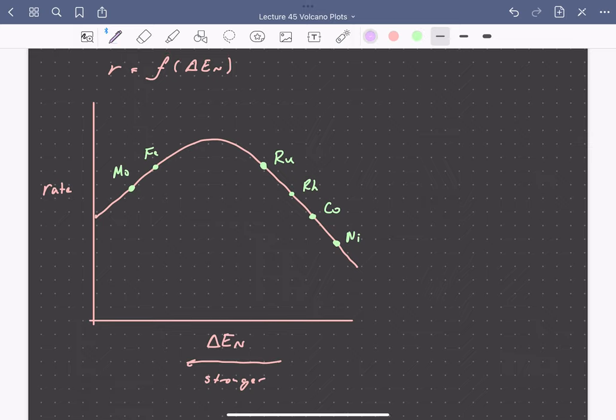We can also think about questions like how the activity volcano would change as we increase temperature. So at a higher temperature, our activity volcano might look something like shown here in purple. So we can see two differences. The maximum activity is higher, and the optimal binding energy shifts to stronger binding. So since desorption is favored at higher temperatures, going to stronger binding can increase the nitrogen dissociation rates without leading to too high of coverages.